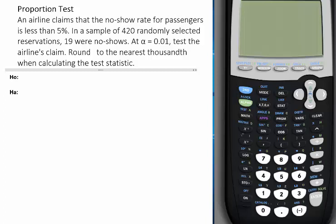The first step is to state the null and alternative hypothesis. It's saying that the percent of no-show is less than 5%. So the alternative hypothesis should be P less than 0.05, and that's where the claim is. The null hypothesis is always P equals 0.05. The alternative should have the less than or greater than or not equal to, and the null, it's always the equal sign.